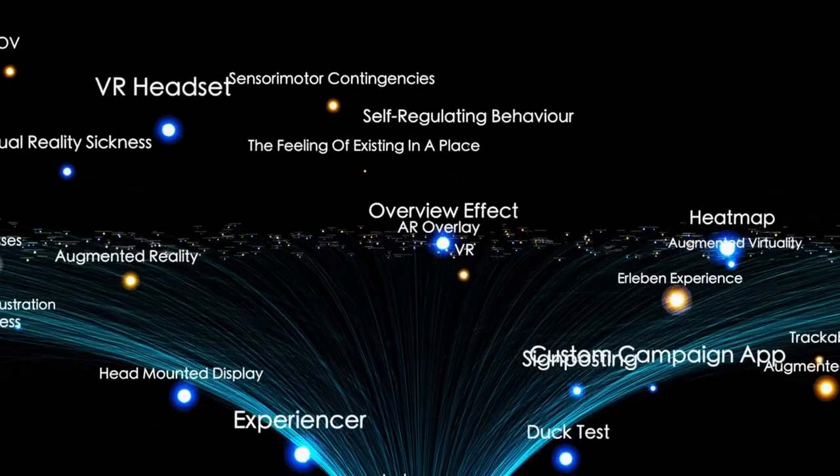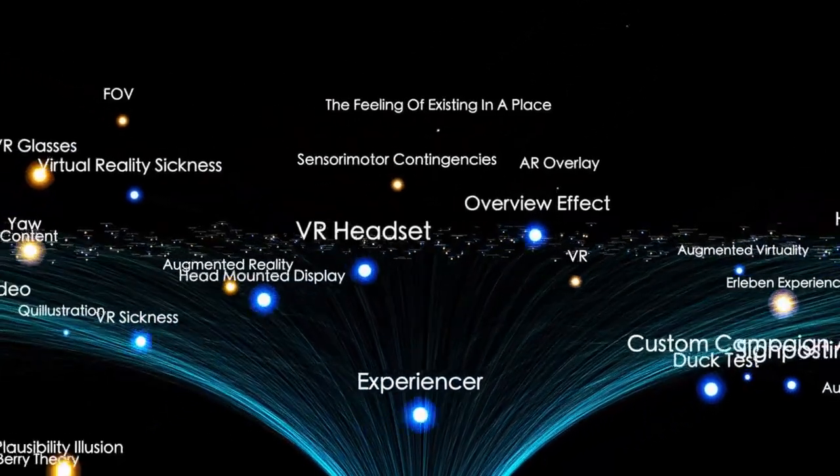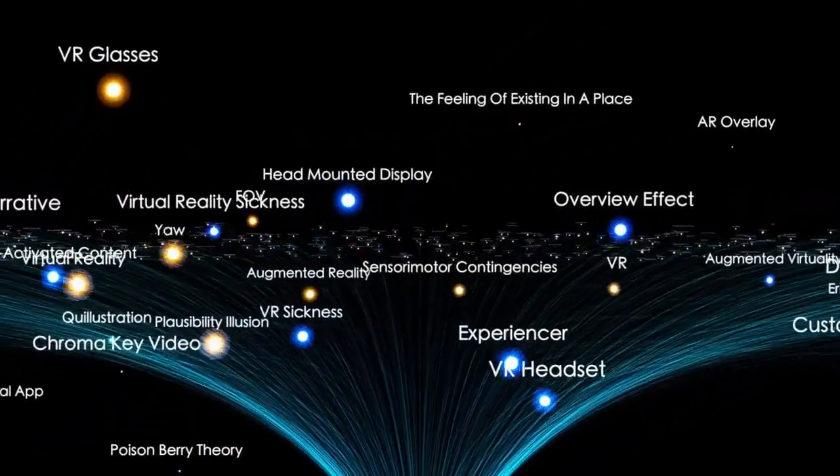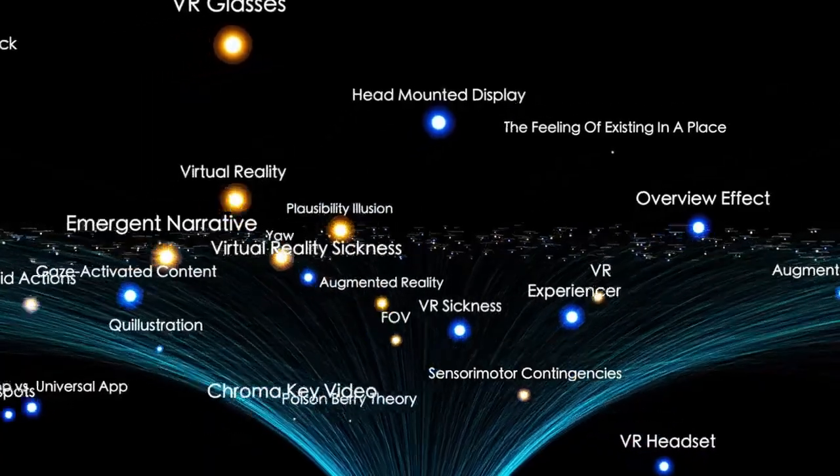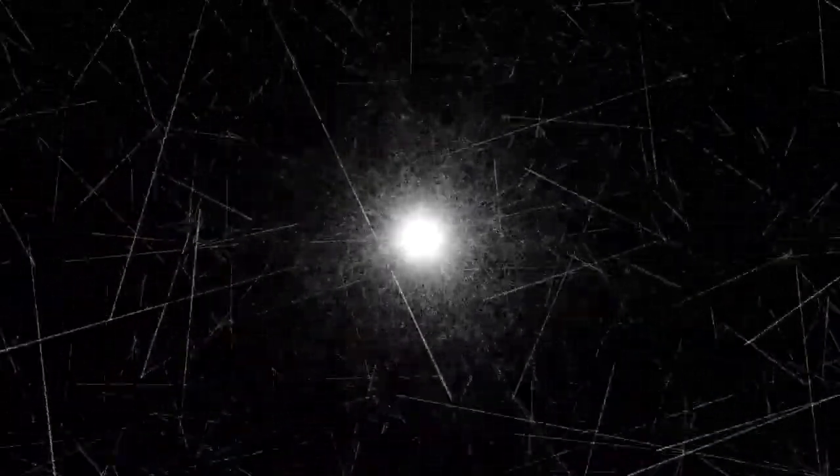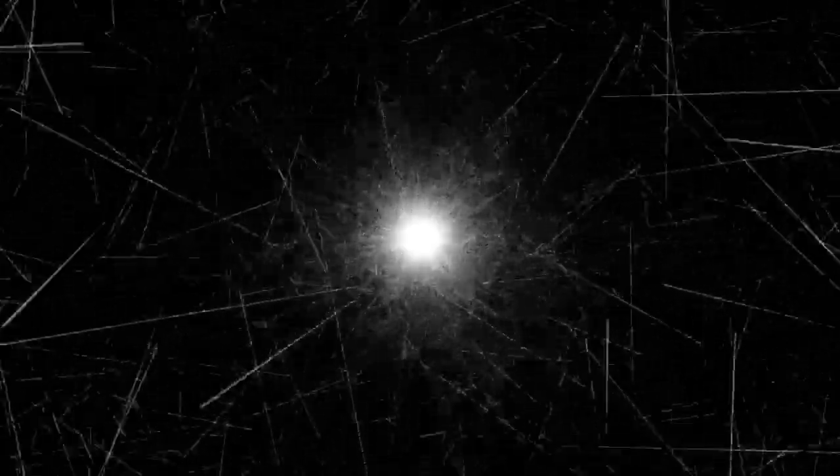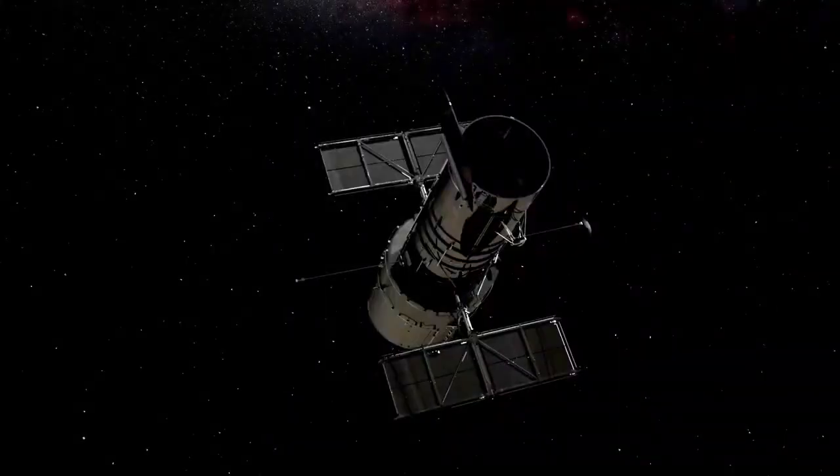One is that our galaxy may contain an unusually low amount of dark matter, the mysterious, invisible substance that is thought to account for much of the gravitational structure in the universe. The other possibility is that our understanding of dark matter itself, including how much of it exists, may be fundamentally flawed.